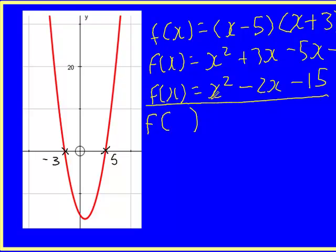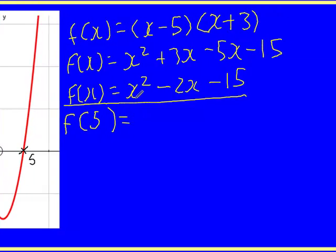Let's work backwards again then. What I have here is 5, so if I try f(5), we get 5², which is 25, take away 2 times 5, which is 10, take away 15.